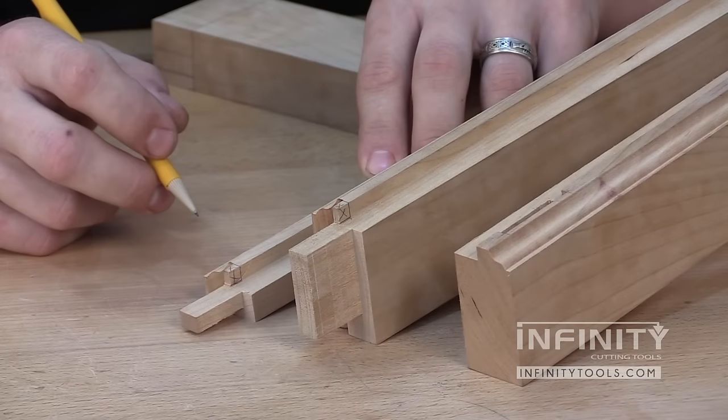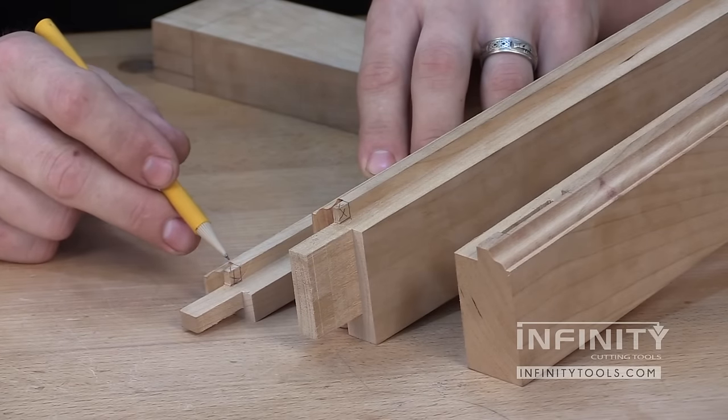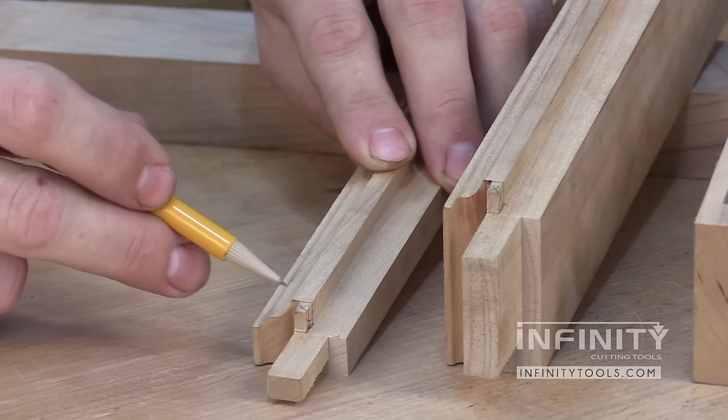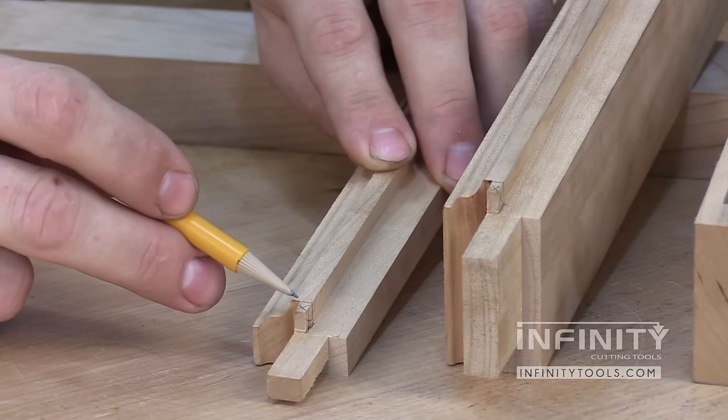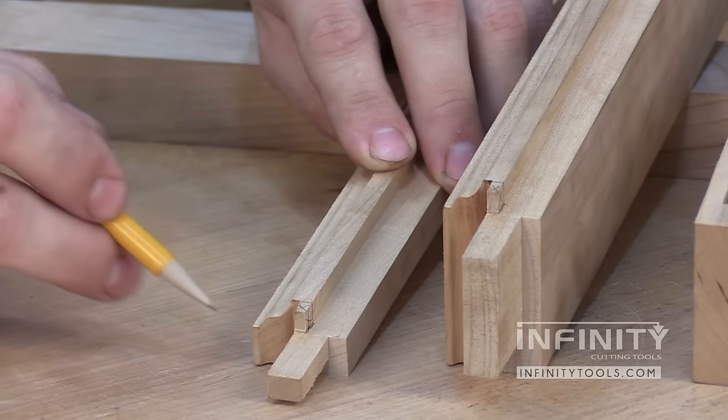This little square of material is also going to be on your mutton bars and it also needs to be removed. Just remember it's going to be on both sides of the tenon.